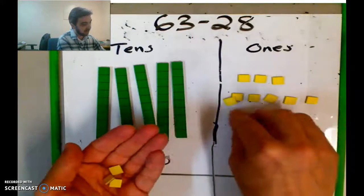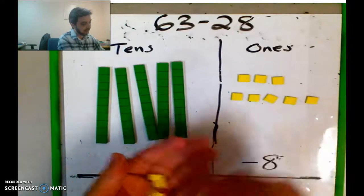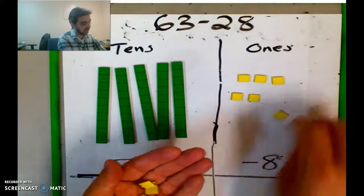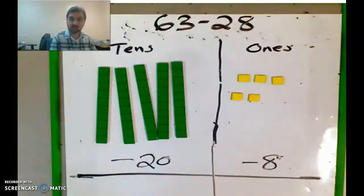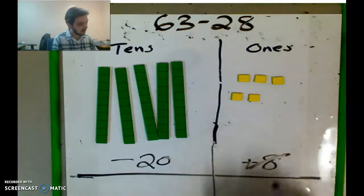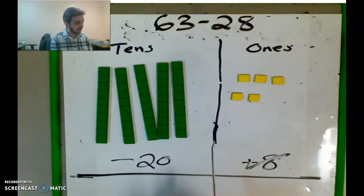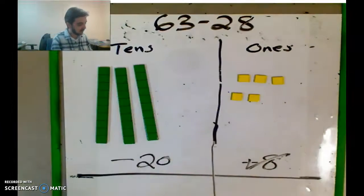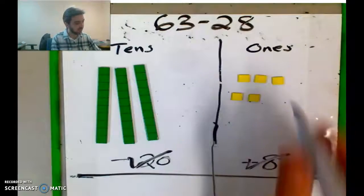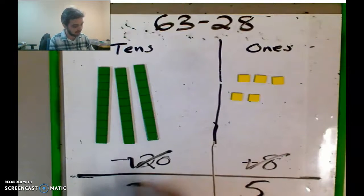Okay, and so I've done that. I always have to check it off because I've done it. So I've subtracted 8, and over here I'm gonna subtract 20. So 10, 20, take those away. So I did that, and I'm left with 5 ones and 3 tens.